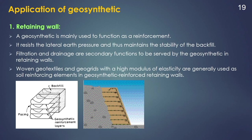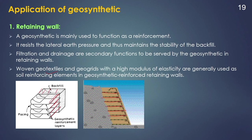In a retaining wall, geosynthetics are mainly used for reinforcement. Layers of geosynthetics are provided in the backfill, and their presence increases the strength of the soil wall, resisting lateral earth pressure and maintaining the stability of the backfill. It can also act as filtration and drainage as secondary functions. Mostly woven geotextiles and geogrids with a high modulus of elasticity are used as soil reinforcing elements in geosynthetic-reinforced retaining walls.